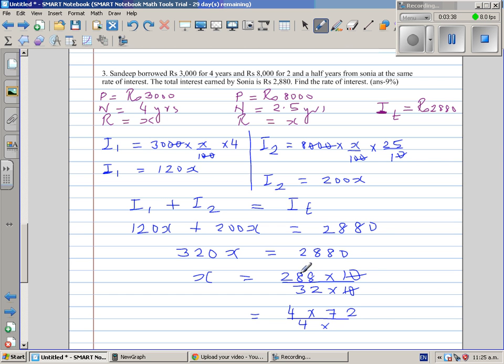4 times 7 is 28, and 4 times 2 is 8. This is 8 times 9 over 8, so this 8 gets cancelled. Your x is 9, which means your rate of interest, r, equals 9%.